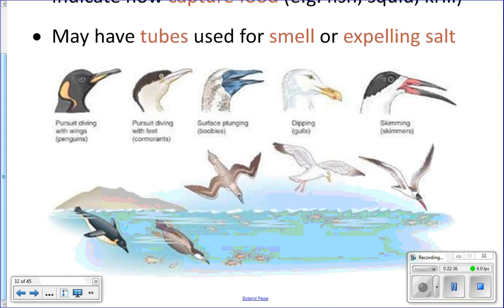The plunge-diving blue-footed booby needs a much sturdier, wedge-shaped beak to withstand the impact of hitting the water and to separate the water as it dives in. Skimmers have a longer lower beak than upper beak. They glide over the surface of the water with that lower bill dragging through the water, and when something touches the beak they snap it shut and capture their food.